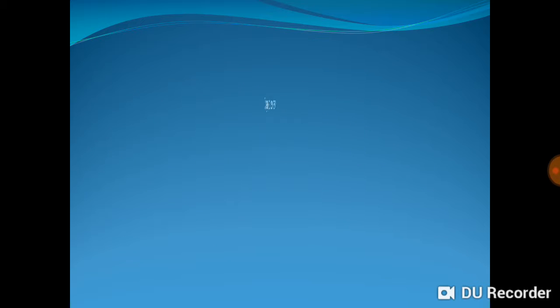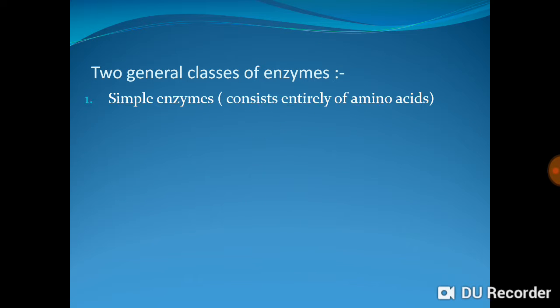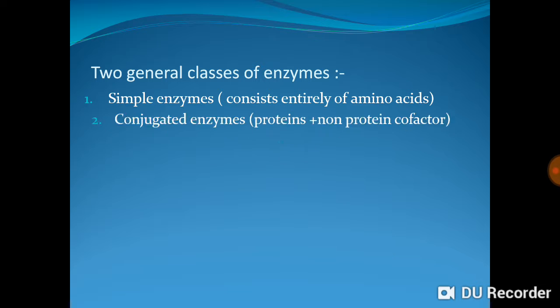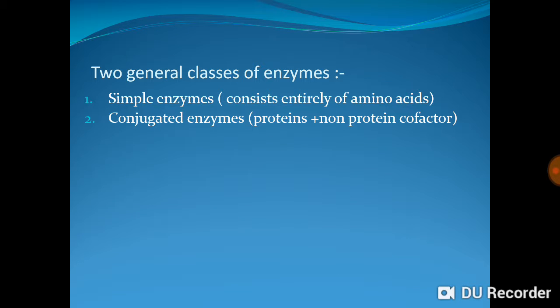There are two general classes of enzymes. The first is simple enzymes, which consist only of amino acids — they are pure proteins. The second is conjugated enzymes, which are made up of a protein part and a non-protein cofactor.